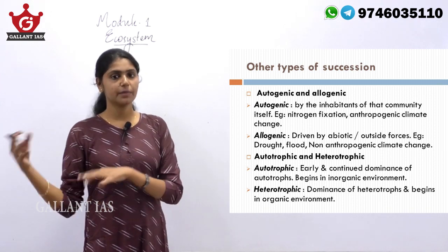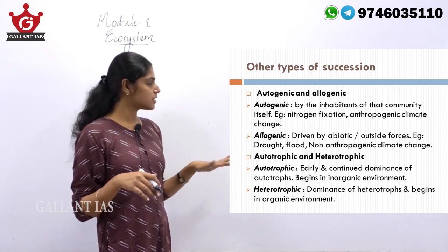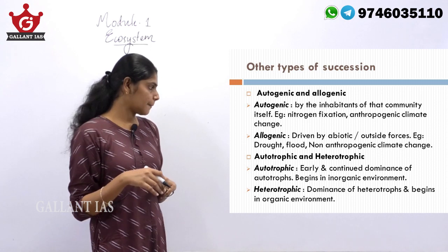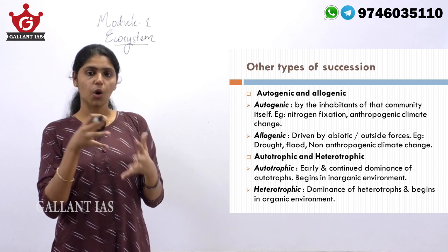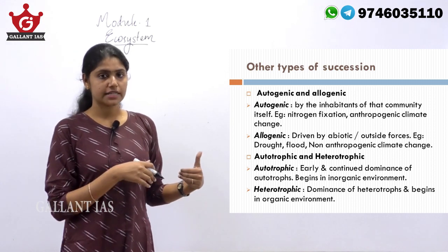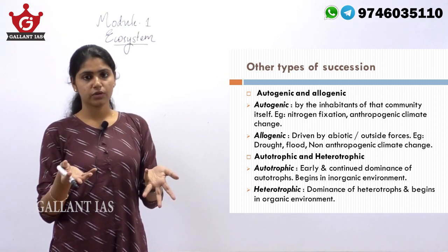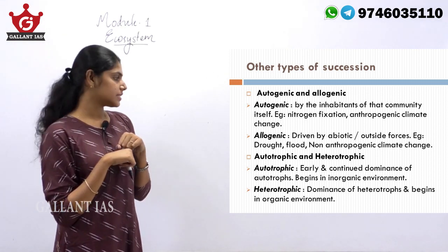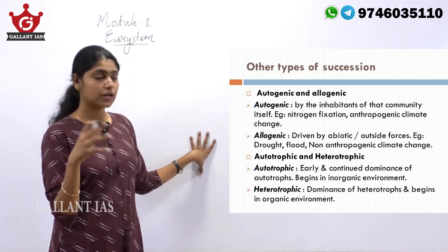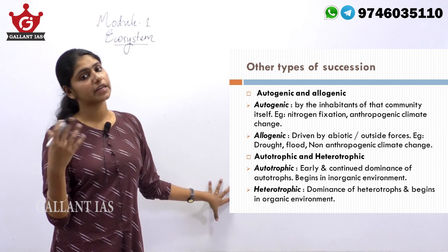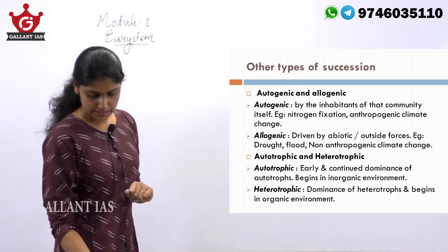Another classification is autotrophic and heterotrophic succession. Autotrophic succession is where there is dominance of autotrophs in the early stages of succession, while heterotrophic succession involves dominance of heterotrophs in the early stages. Autotrophic succession begins in an inorganic environment, whereas heterotrophic succession begins in an organic environment. These are the other two types of succession.